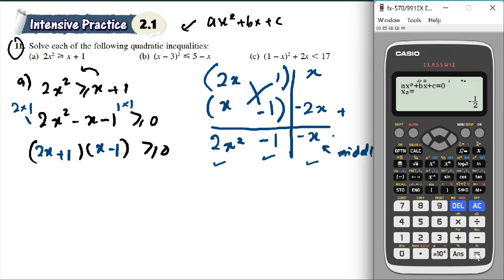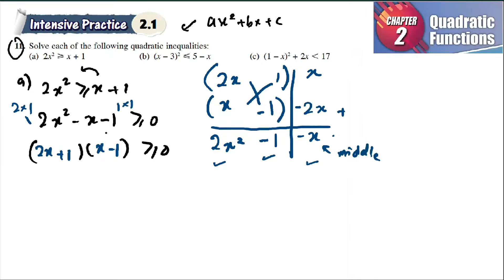I get x = 1 and x = negative 1/2. So here x − 1 gives x = 1, and 2x + 1 gives x = negative 1/2. When you get the value of x, positive becomes negative, so negative 1/2.